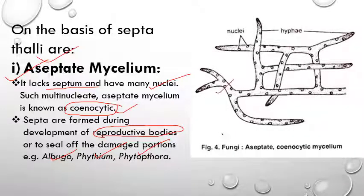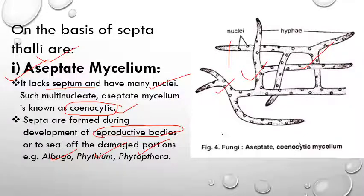In this filament we can see there is no septa formation; the hyphae intermingle showing a multinucleate condition. Septa are formed only at the time of reproduction or when damage occurs. Otherwise this is an aseptate — coenocytic — mycelium with a multinucleate condition.